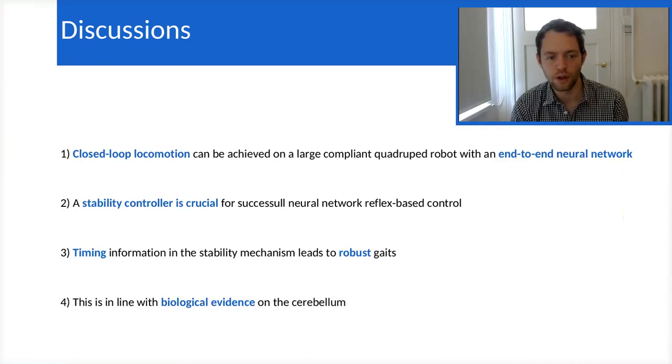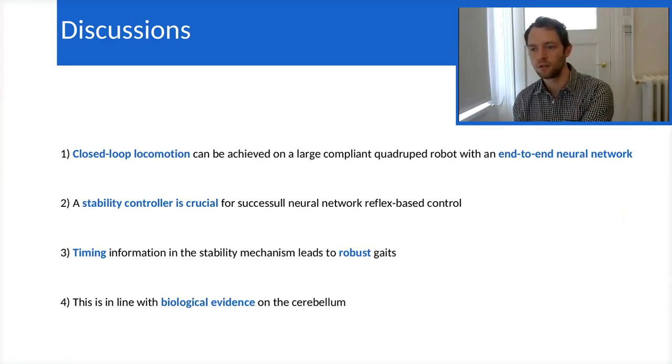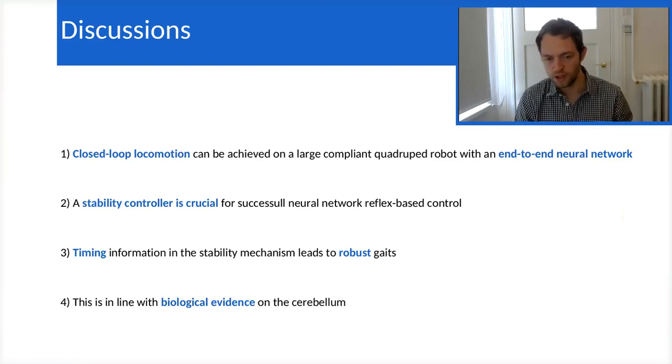So to conclude this short presentation, first we have demonstrated that we can have a closed-loop robotic system achieving end-to-end locomotion using a neural network. To acknowledge, most work has been done in simulation, but there are not a lot done on real robots, especially for locomotion. However, a stability controller was crucial in our framework, and this stability controller relies on timing predictive information to lead to robustness against disturbances. This is actually in line with some biological evidence about the cerebellum.